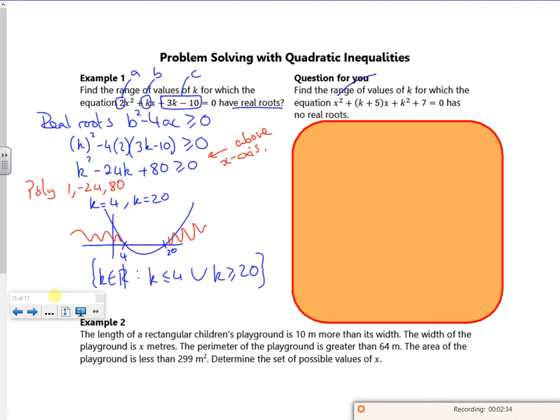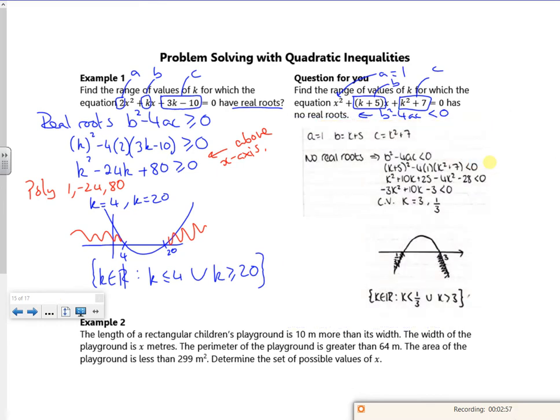There's one for you to have a go at. A bit more tricky this one, so you've got a is 1, b is k plus 5, c is k squared plus 7. And it's got no real roots, so I'm looking for b squared minus 4ac is less than 0. So I'll let you give that a go, I'll reveal it now. You can pause it, have a go and then check it.